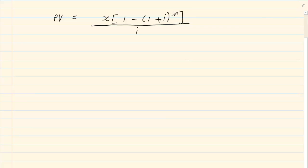If you want to make n the subject of the formula, we are first going to divide by x and multiply by i. So we are going to multiply by i on one side and divide by x. We now have 1 minus (1 plus i) to the power of minus n equals i times PV all over x.